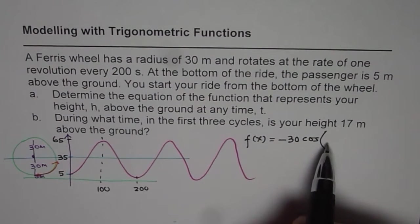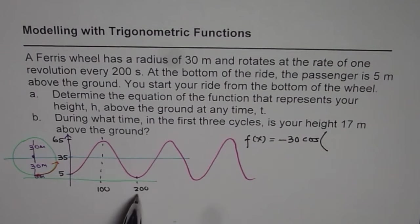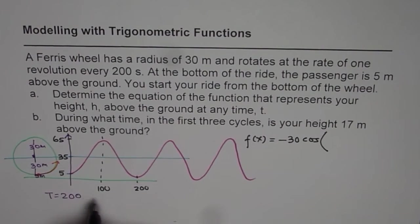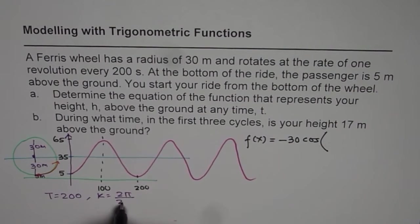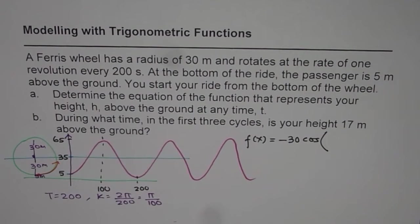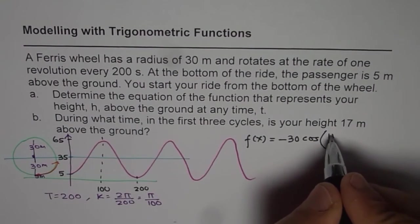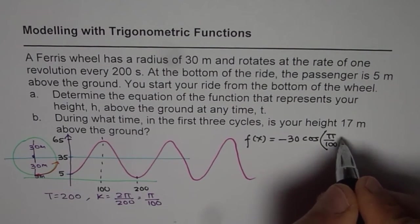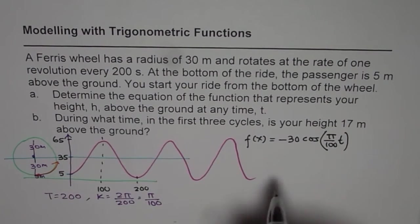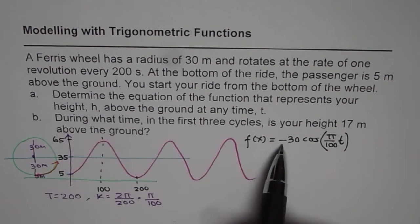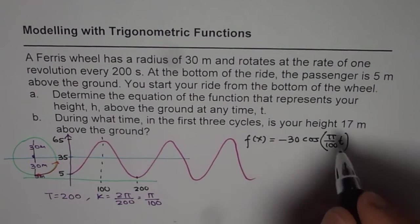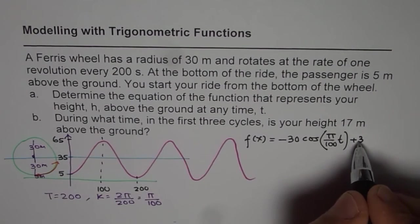Now what is the k value? The k value is 2π divided by the time period. Since T equals 200, k equals 2π over 200, which simplifies to π over 100. So we write π over 100 times t. The phase shift has already been taken into account since we used the negative cosine. The vertical axis (midline) will be at 35, so we have plus 35.